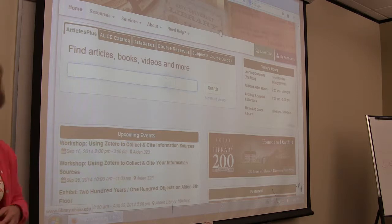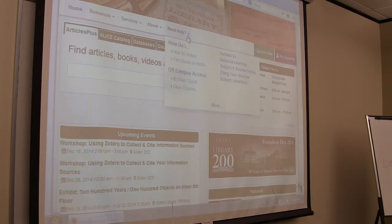So here's the front page. You've got your ALICE catalog, databases, course reserves, and subject and course guides. We'll go through those a little later. But right now what I want to show you is under your need help section, you can go to need help and citing your sources.